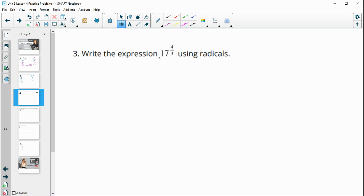Number three, write an expression, write the expression 17 to the four thirds using radicals. So remember, we'd have the cube root. That's our radical. And then we have 17 to the fourth power.